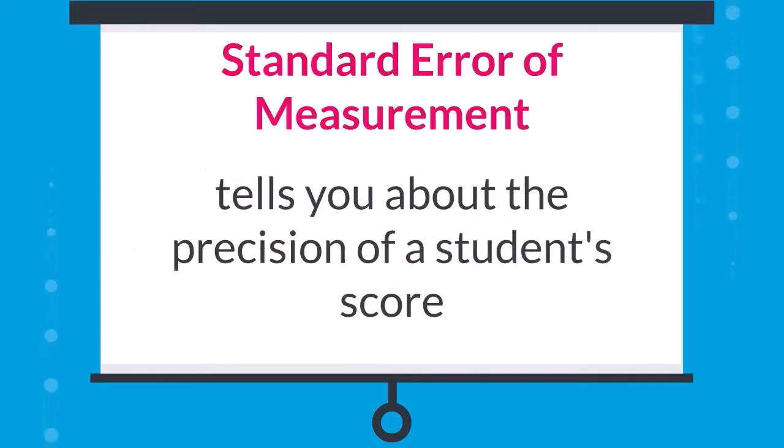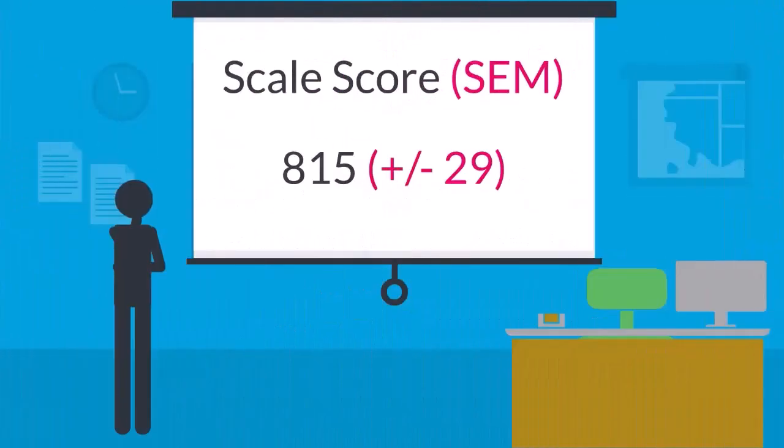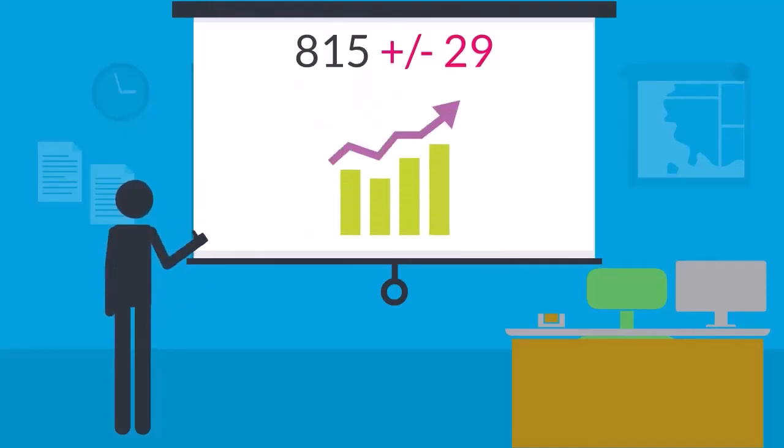This metric tells you about the precision of a student's score and helps to account for the variables that inevitably affect a student's final score. By considering both a student's scale score and the SEM, educators can get an idea of how precise a student's score is and use that information when interpreting test scores.